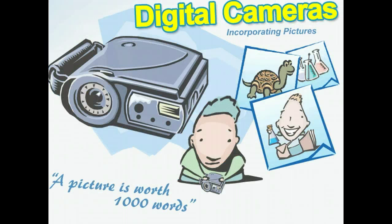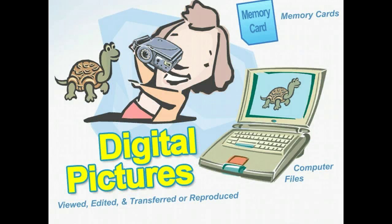Using pictures to illustrate a lesson can be helpful to students' comprehension of a subject, and digital cameras are a technology that is making incorporating pictures into lessons interesting, easy, and convenient. A digital camera is a filmless camera that stores pictures digitally using a variety of storage devices such as memory sticks or memory cards. The camera can then be plugged into a computer to transfer the pictures into computer files, which can then be viewed, edited, and transferred or reproduced in a variety of formats. Digital cameras have a high resolution for quality pictures that are clear and vivid, and this resolution is measured in megapixels.